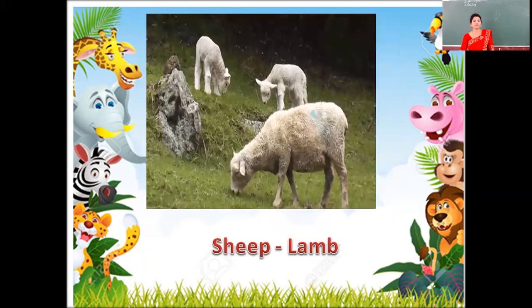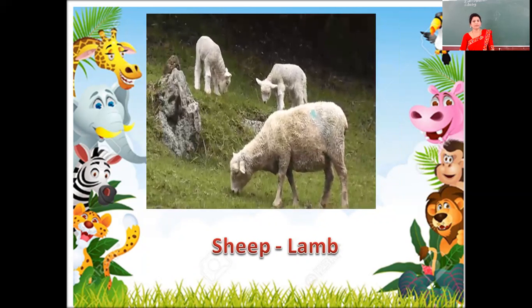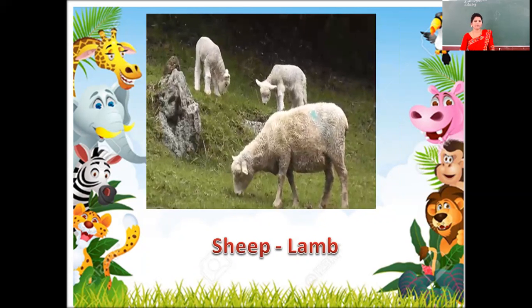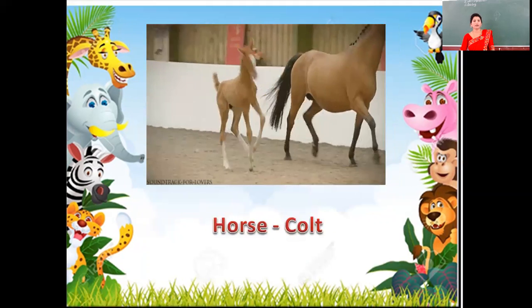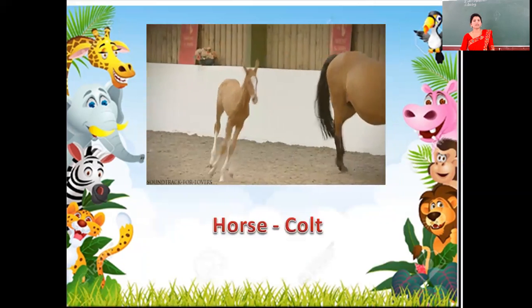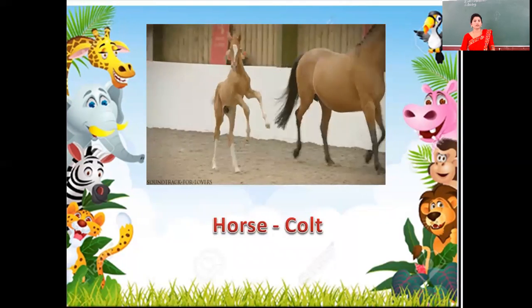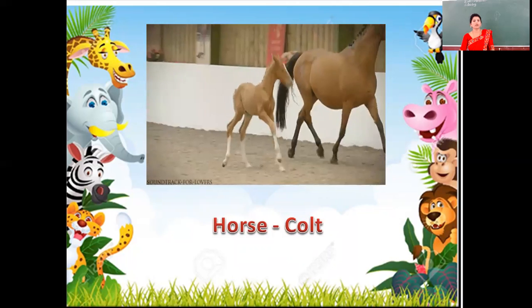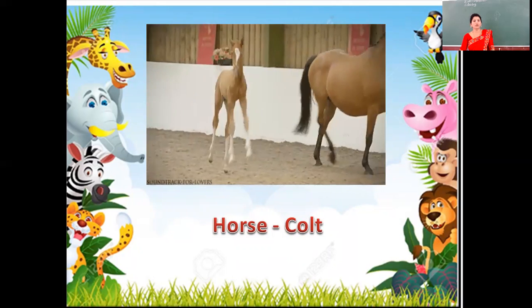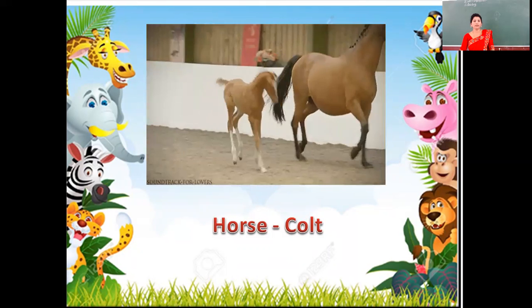Next feature is of sheep and lamb. Young ones of sheep is lamb. S-H-E-E-P, sheep. L-A-M-B, lamb. Next feature is of horse and foal. Young ones of horse is foal. H-O-R-S-E, horse. F-O-A-L, foal.